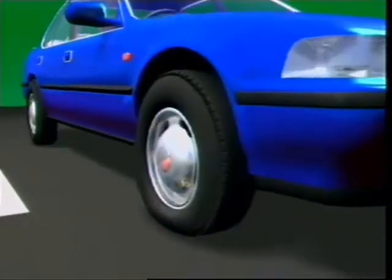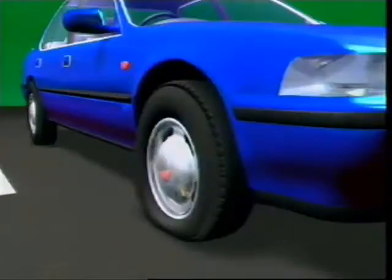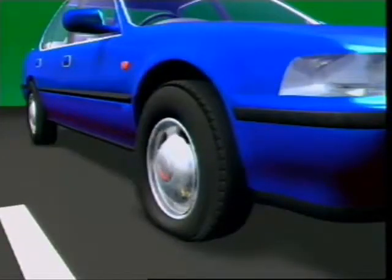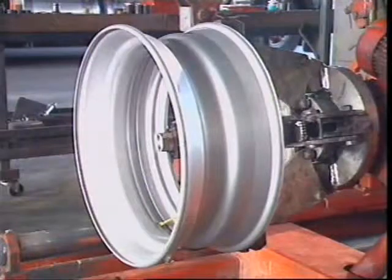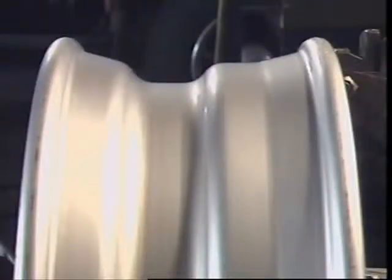In the event of sudden deflation or blowout, safety ridges prevent the tyre moving down into the well, helping maintain control of the vehicle while it is being braked. Well-based rims can also be used on heavy commercial vehicles for tubeless tyres, referred to as 15-degree drop centre rims.